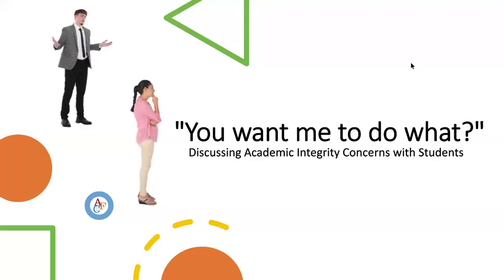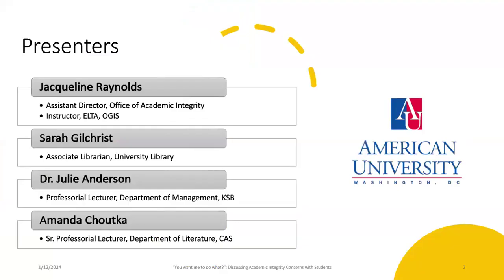About how to talk about students, or to talk with students about those issues, we're going to give you some information about that. My name is Jacqueline Reynolds. I am the Assistant Director for the Office of Academic Integrity, and I'm also an instructor in the English Language and Training Academy in the Office of Global University Studies. I teach writing skills, communication skills, and research skills to international students mainly.